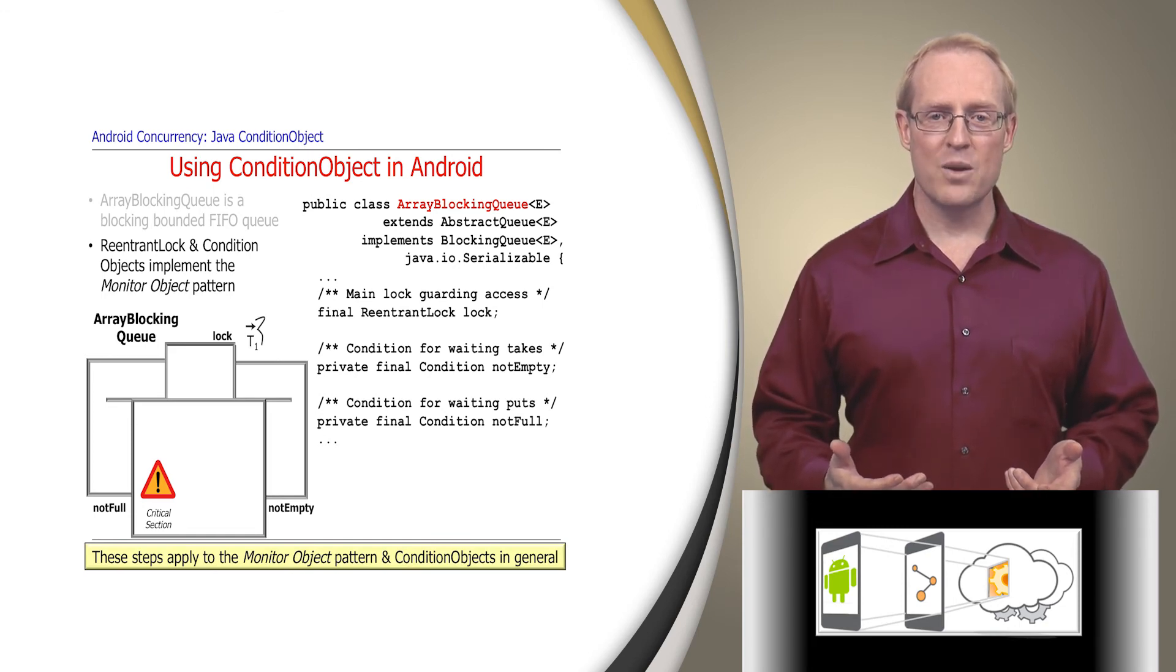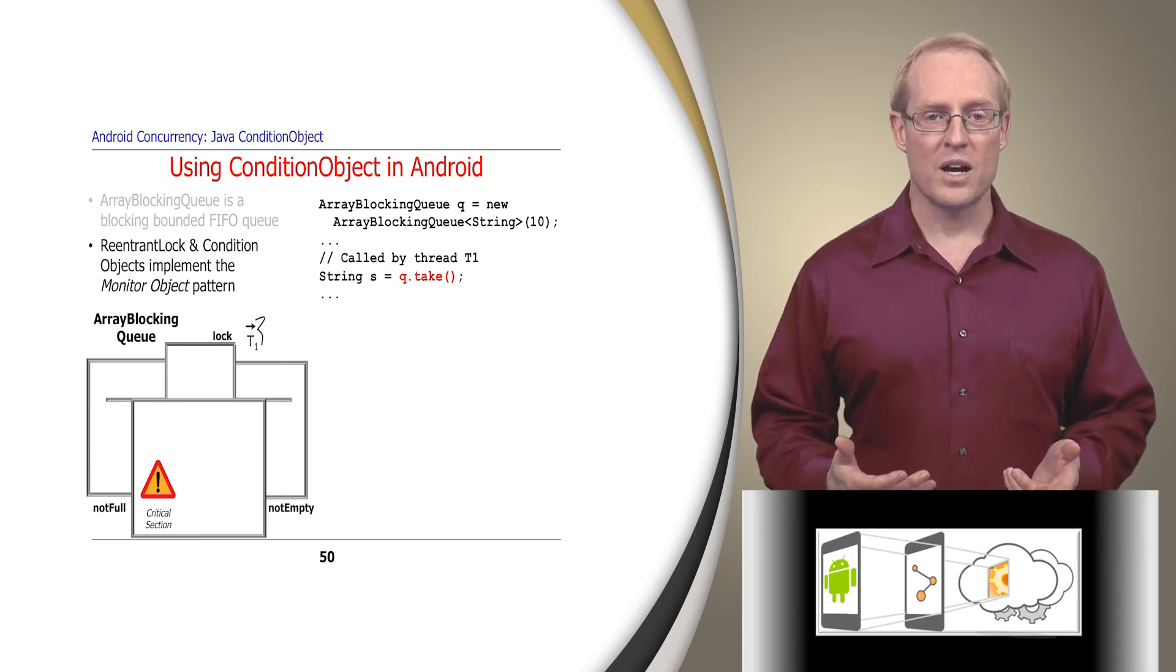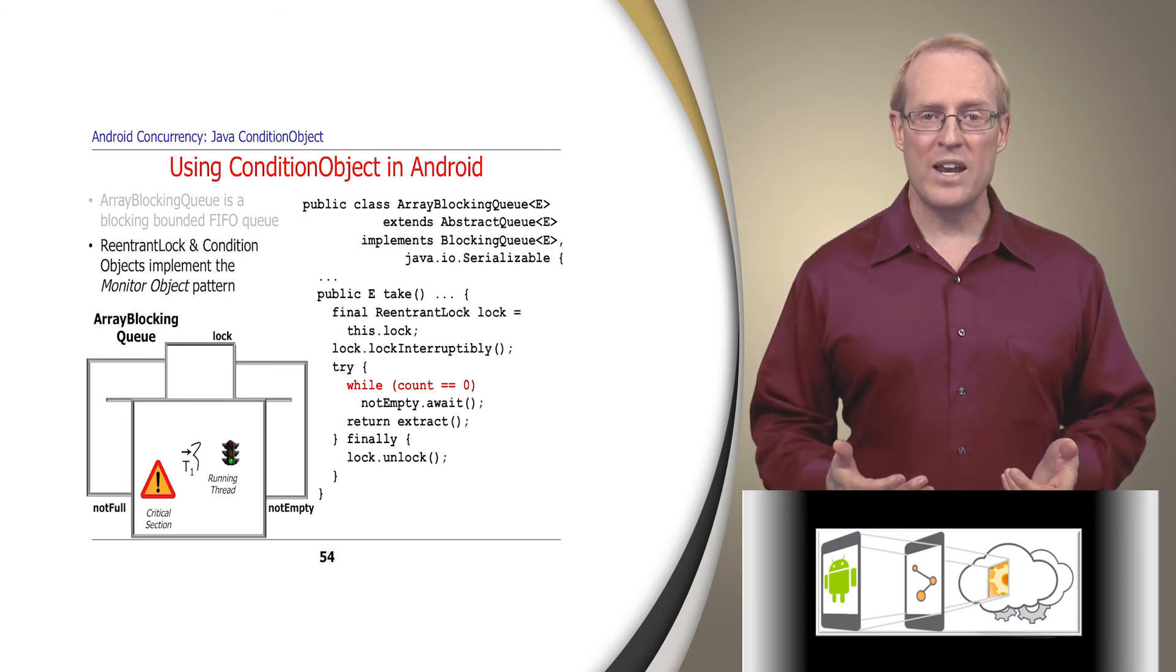Assume thread T1 calls take to remove the first element in a new instance of array-blocking-queue, which will block since the queue is empty. When take is called, it acquires the reentrant lock if no other thread owns it and starts to run in the monitor object's critical section, where it will determine that the count is zero and so must wait on the not empty condition object, which atomically releases the lock and puts thread T1 to sleep on the condition object.